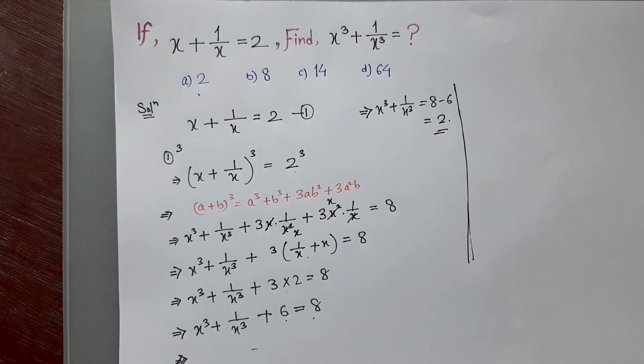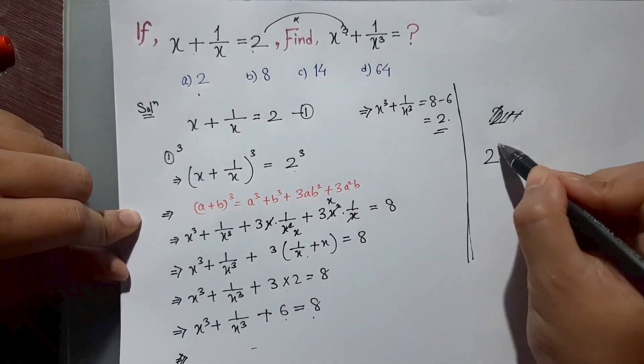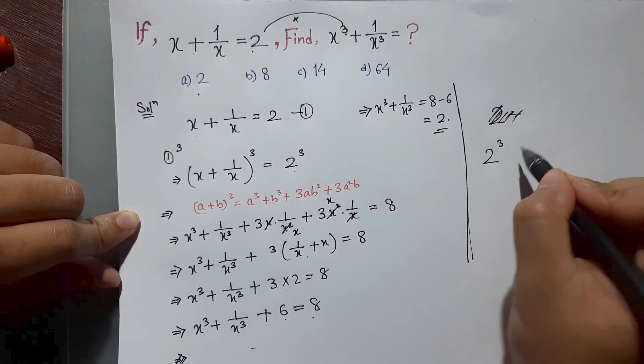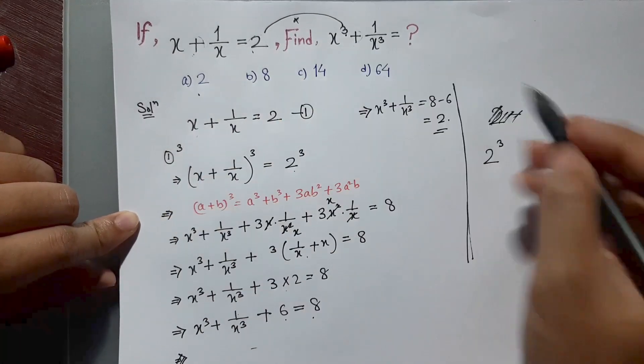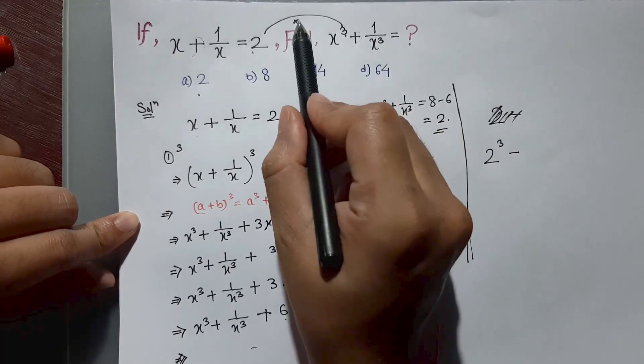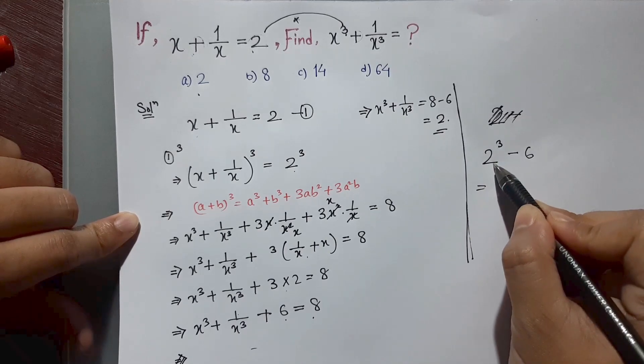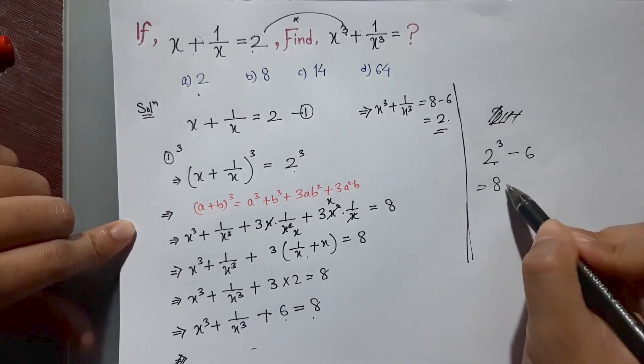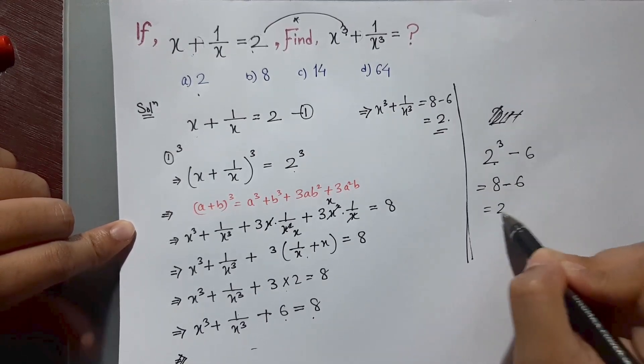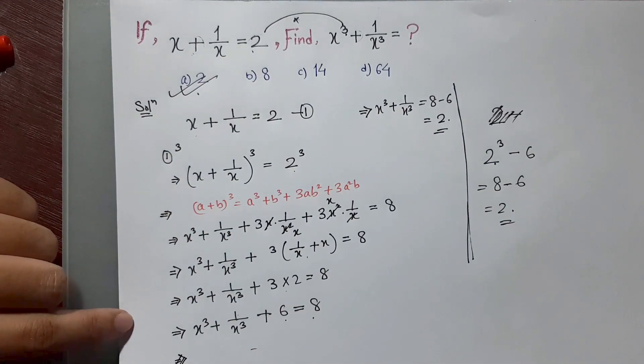Here is 2, so we'll write 2. Here is cube, so we'll cube it. Here is positive sign, so we'll give a minus here. Then we have to do 3 into 2, that is 6. We have to subtract 6. 2 cube is 8, 8 minus 6 is 2. Correct answer is 2. Thanks for watching guys, please like and subscribe.